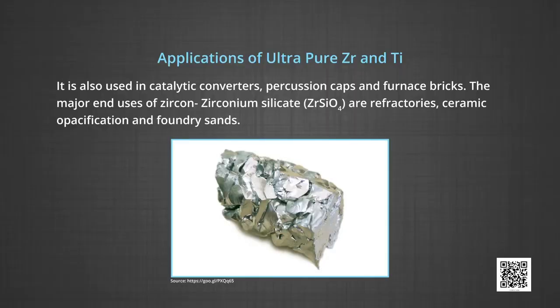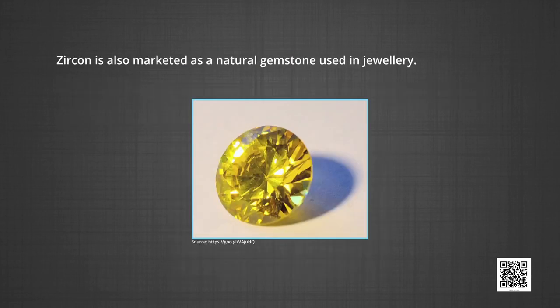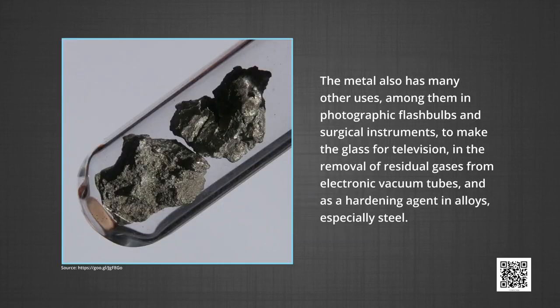Applications of ultra pure zirconium and titanium. Zirconium is used as an alloy such as zircaloy which is used in nuclear applications since it does not readily absorb neutrons. It is also used in catalytic converters, percussion caps and furnace bricks. The major end uses of zircon, zirconium silicate are refractories, ceramic opacification and foundry sands. Zircon is also marketed as natural gemstone used in jewelry. The metal has many other uses among them in photographic flash bulbs and surgical instruments to make the glass for television, in the removal of residual gases from electronic vacuum tubes and as a hardening agent in alloys specially steel. The paper and packaging industries are finding that zirconium compounds make good surface coating because they have excellent water resistance and strength.